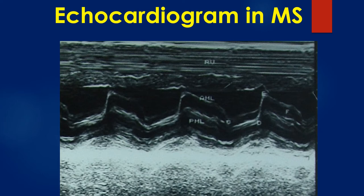M-mode echocardiogram showing the paradoxical anterior motion of the posterior mitral leaflet in diastole with reduced separation of the leaflets. The anterior mitral leaflet has certain points marked in its movement — C, D, E, and F. The E-F slope is reduced in mitral stenosis and becomes almost flat in severe mitral stenosis.